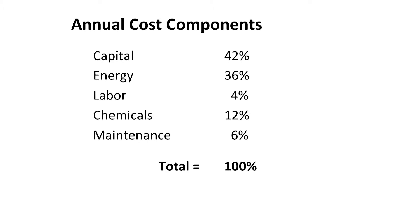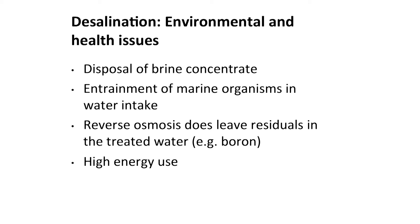This slide shows a breakdown of the relative size of different components of the total annual cost of a desalinization facility. Capital and energy are the two biggest cost components — together they constitute about 78% of the total annual cost, making these very capital-intensive and energy-intensive facilities. Note how small the labor contribution is to the total annual cost: just 4%.